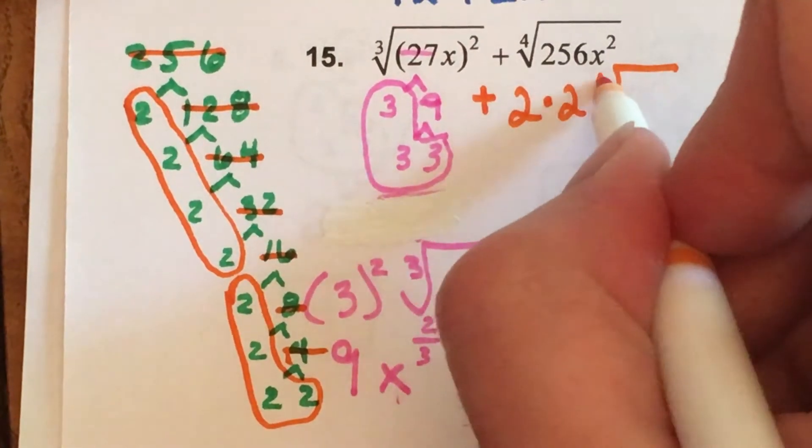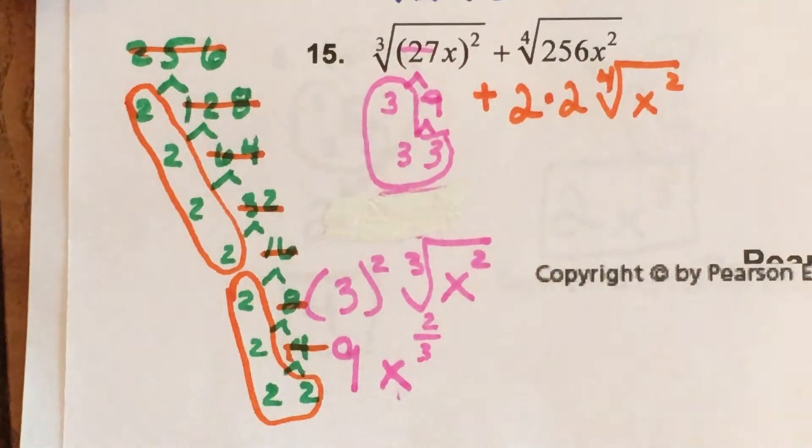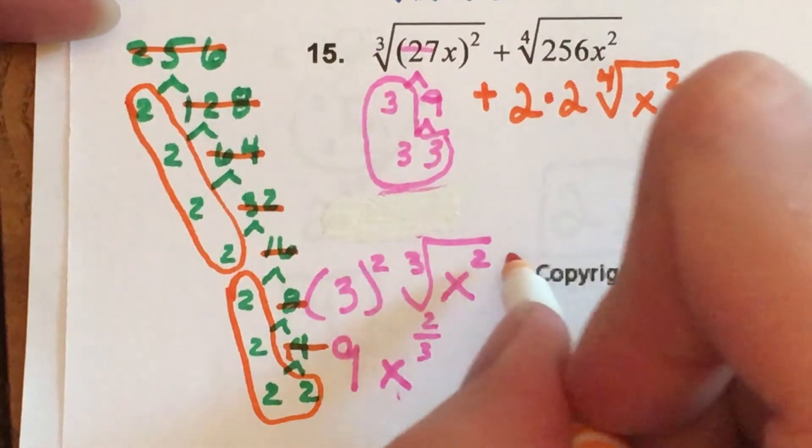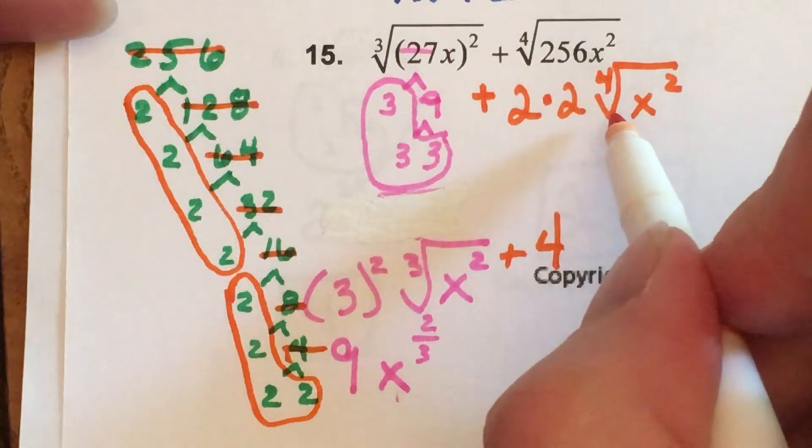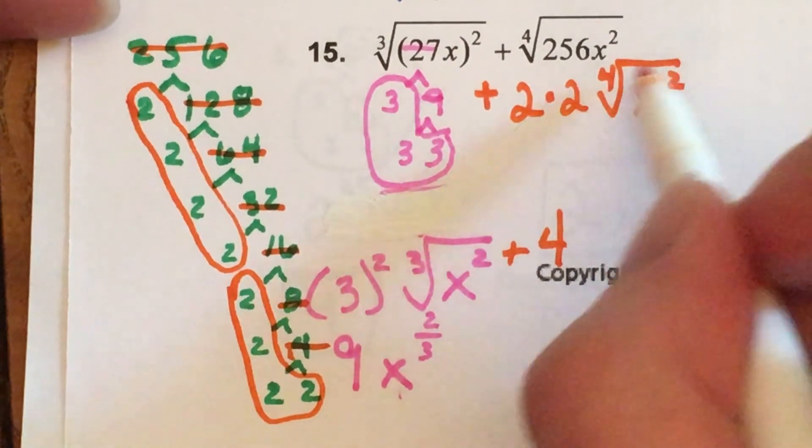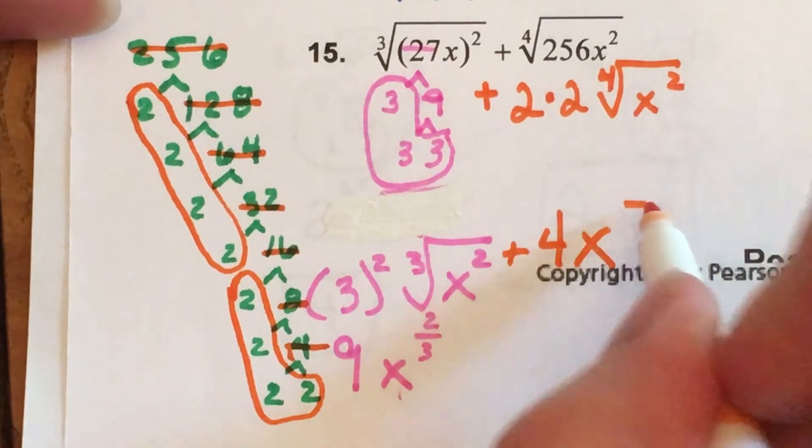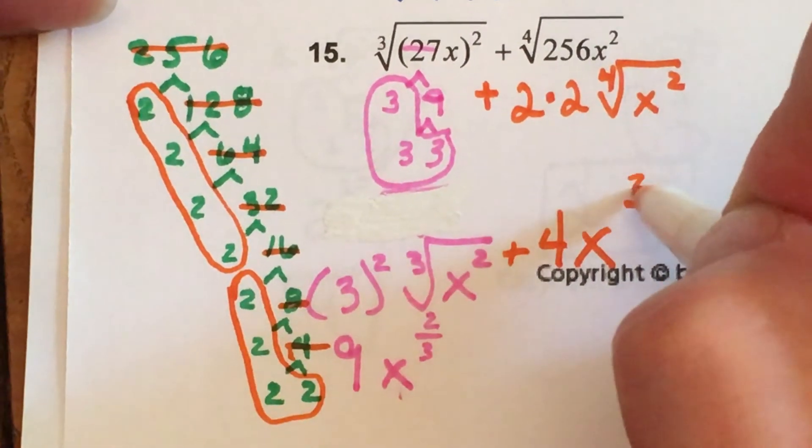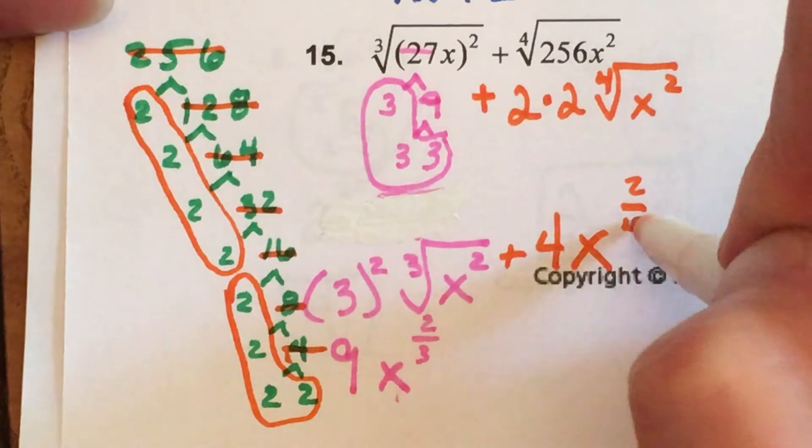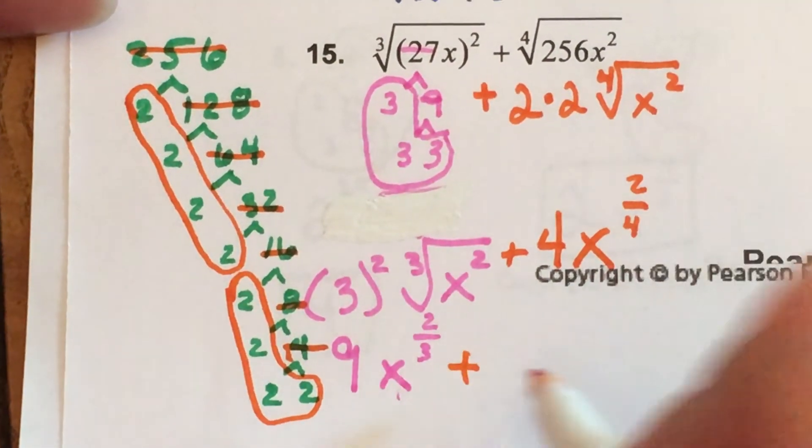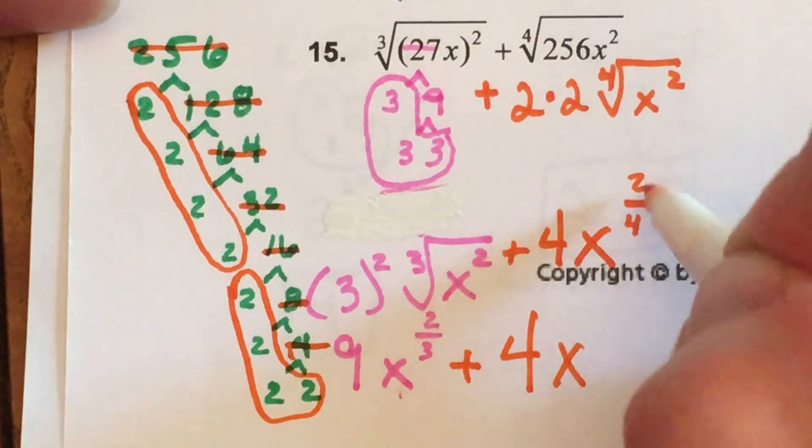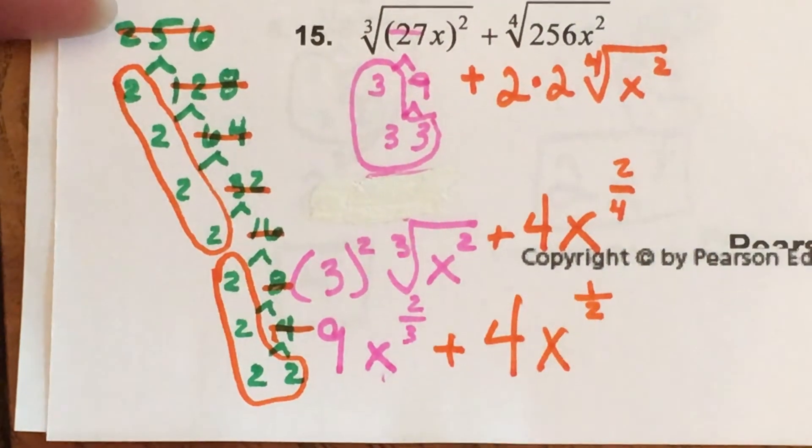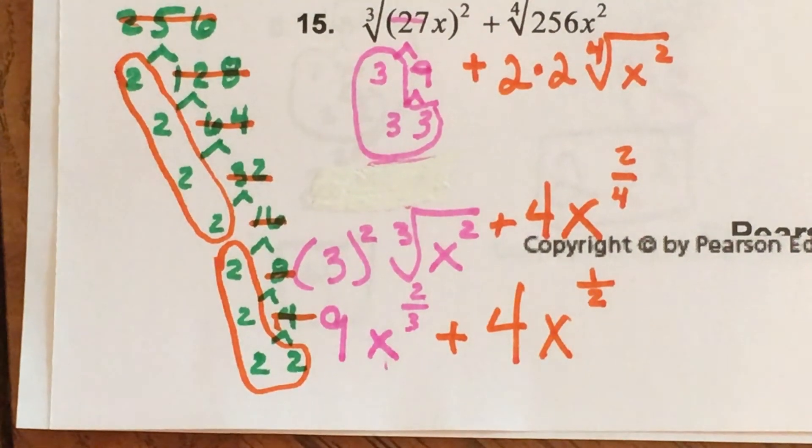I have a bundle of 2's times another bundle of 2's. I still have the fourth root of x squared. So 2 times 2 that's going to make 4 and this can now be shifted into exponential form. x to the what number goes on the numerator the 2 or the 4? The 2 good job and the denominator is the 4. Can 2 over 4 be reduced? It sure can, it's one half.